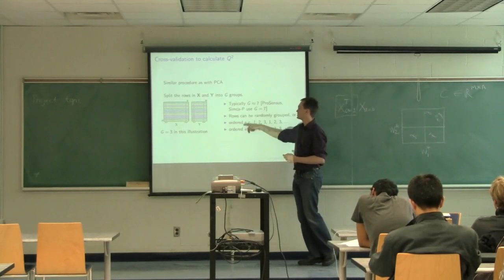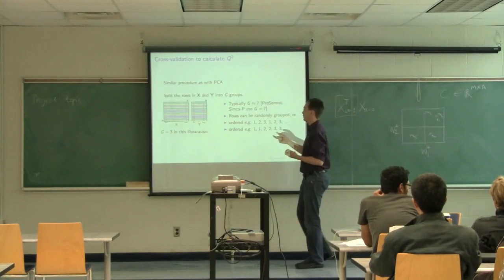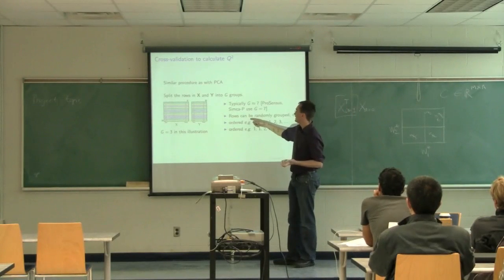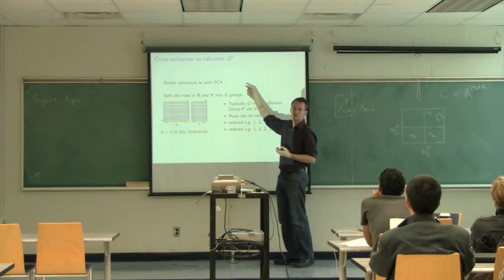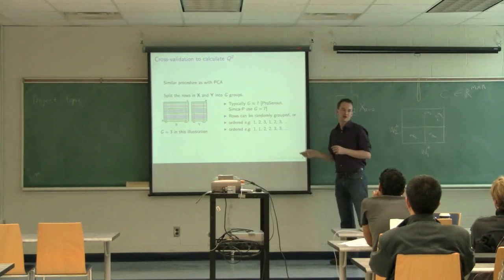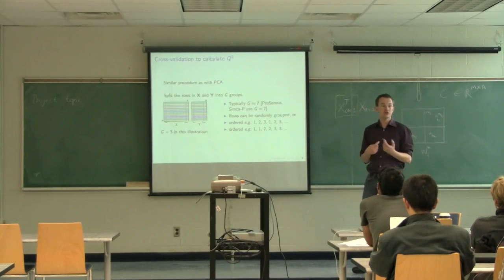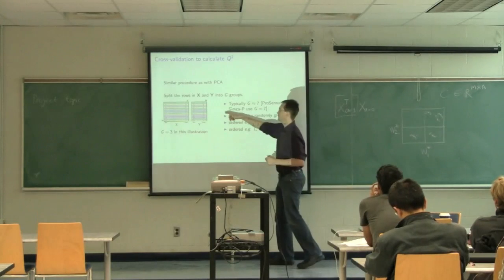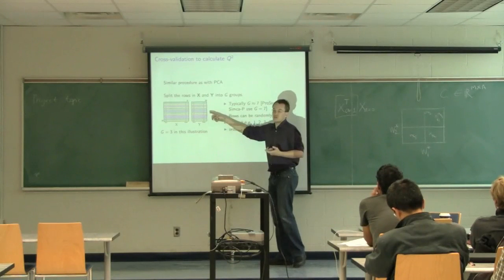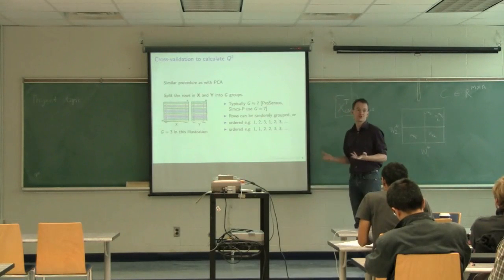How you choose to pick your row ordering can actually influence your Q-squared value. If I choose a different row ordering, I'm going to get a different Q-squared value. Q-squared is not like R-squared: R-squared has an agreed definition and one software package will agree with another. But Q-squared is totally dependent on how you choose your rows and how you group them. So you can get different Q-squared values from different software packages.